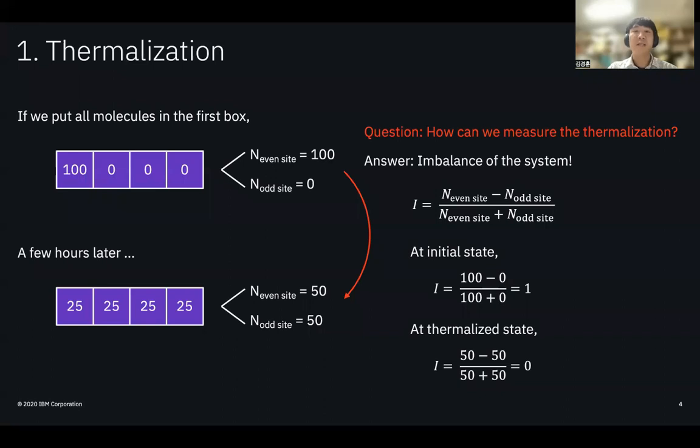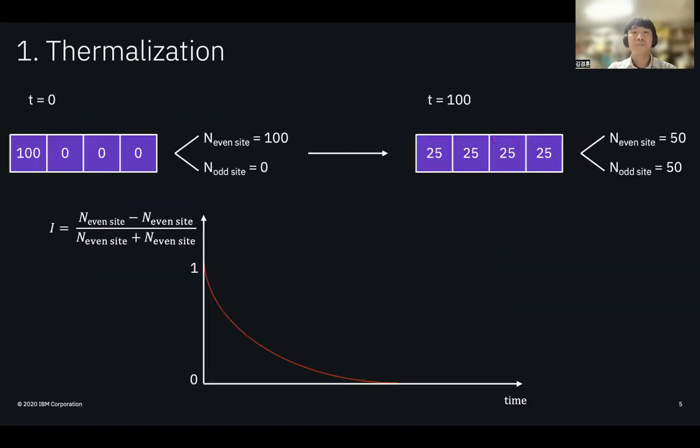This quantity is called imbalance of the system. At initial state, imbalance is one, while the imbalance is zero at the final stage. So as the system is thermalized, we can expect the imbalance goes to zero.